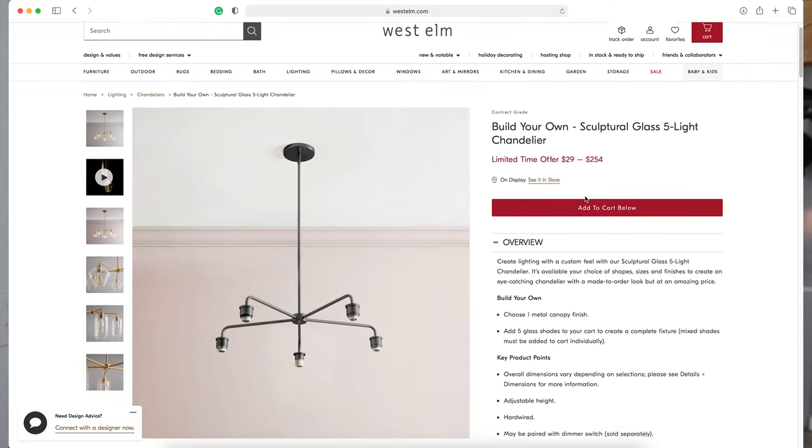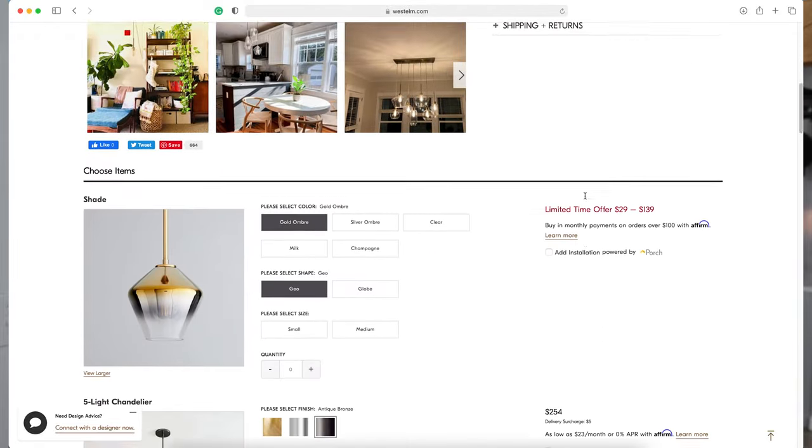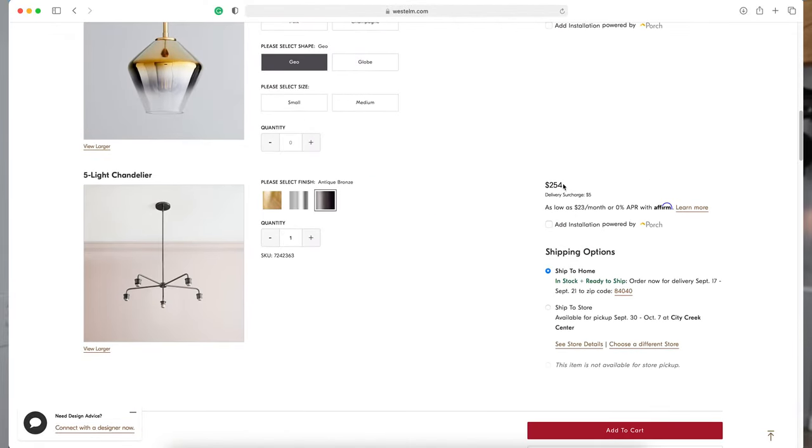The chandelier was inspired by the build your own five light chandelier at West Elm with a cost of about $255 to buy. And because you're probably wondering, this DIY chandelier cost me about $110 to make and I would say that's a pretty good savings, so let's get started on this project.